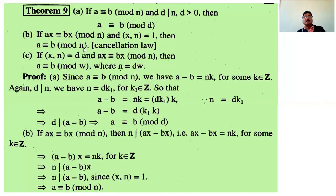Theorem C: if gcd(x, n) equals d and ax is congruent to bx modulo n, then show that a is congruent to b modulo w, where n equals d times w. The greatest common divisor of x and n is d means d divides both x and n.